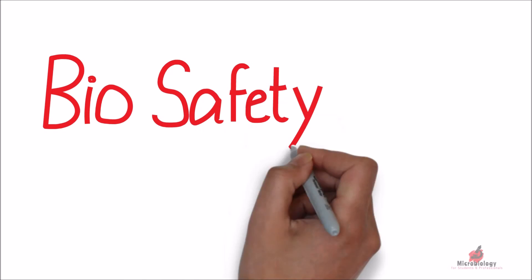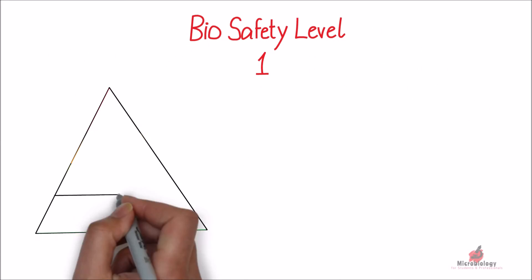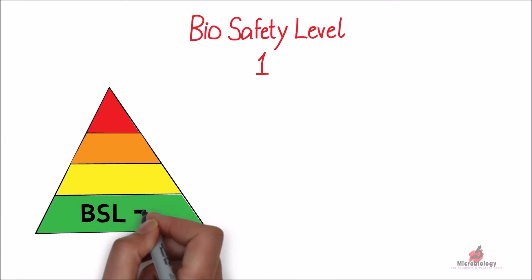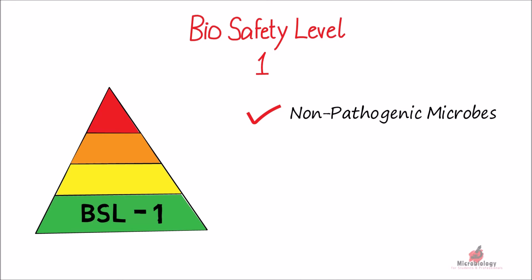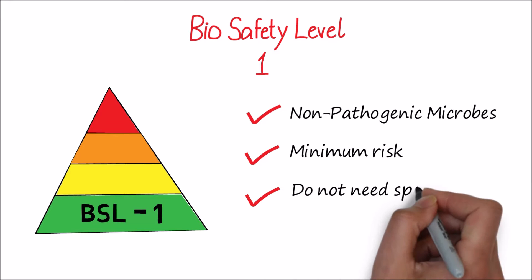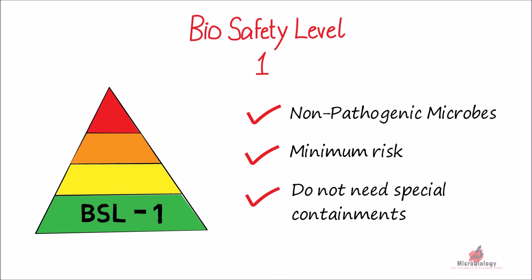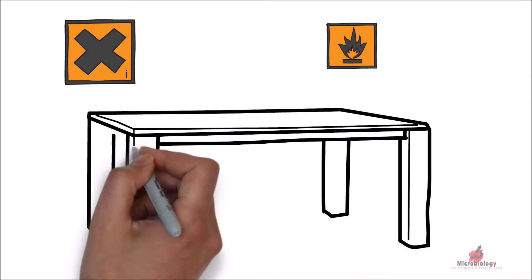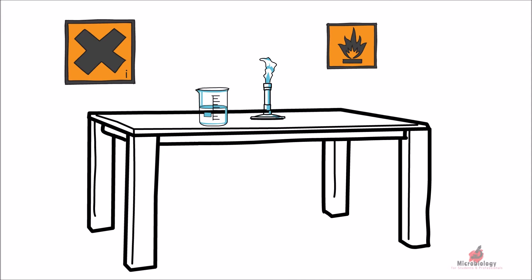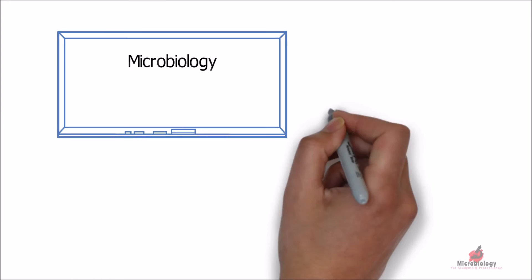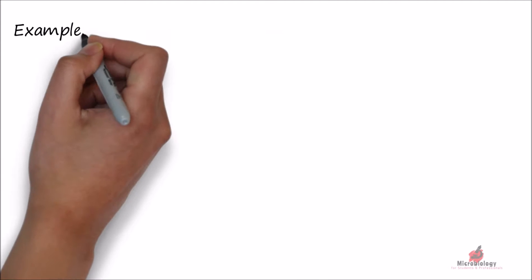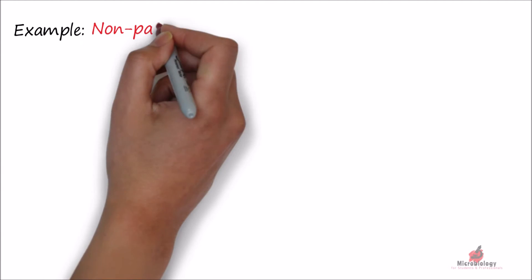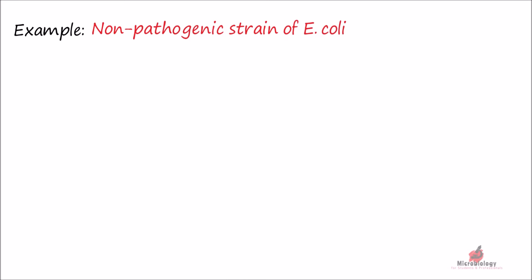Biosafety Level 1, or BSL-1, is the lowest biosafety level. It includes microbes that are non-pathogenic. Laboratory personnel can work with minimum risk in these facilities. BSL-1 labs do not need special containment equipment, and people can work on open bench tops. These labs are typically used for students and trainee microbiologists. An example of a BSL-1 organism is the non-pathogenic strain of E. coli.